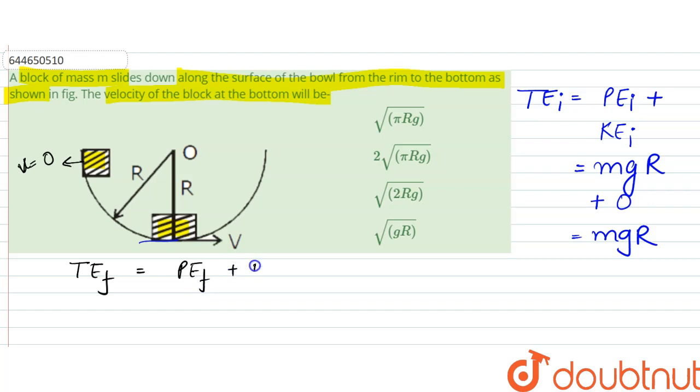We are considering with respect to this position. The height with respect to this position is zero, so this potential energy would be zero, plus kinetic energy would be half mv square.